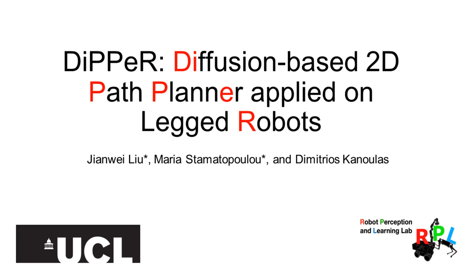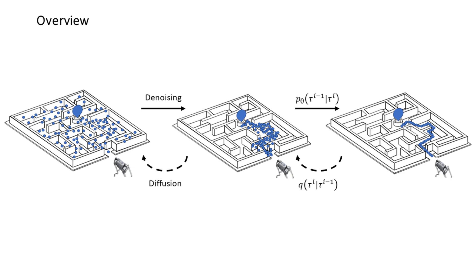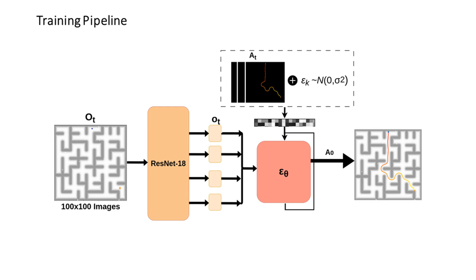We introduce our latest work on legged robot path planning using Diffusion Model Dipper. Our method offers global path planning capability using an image-guided denoising diffusion model.